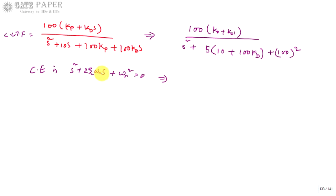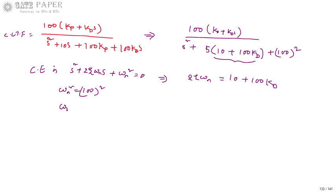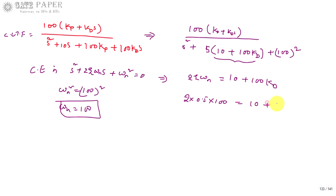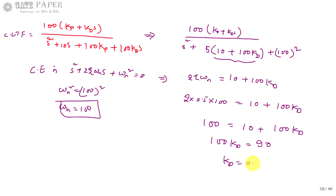Comparing coefficients: ωn² equals 100², so ωn equals 100. Comparing the coefficient of S: 2·zeta·ωn equals 10 plus 100·Kd. Substituting zeta equals 0.5 and ωn equals 100: 2 × 0.5 × 100 equals 100 equals 10 plus 100·Kd. Therefore 100·Kd equals 90, giving Kd equal to 0.9.